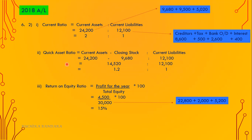Number two: quick asset ratio equals current assets minus closing stock, to current liabilities. Total current assets are 24,200; deducting closing stock gives 14,520. Current liabilities remain 12,100. The answer is 1.2 to 1.